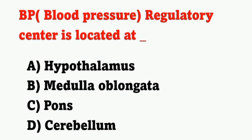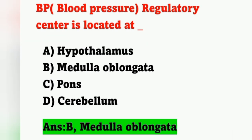Next question: the blood pressure regulating center is located at — options: A) hypothalamus, B) medulla oblongata, C) pons, D) cerebellum. The BP regulating center is located at the medulla oblongata, also known as the cardiovascular center. Option B is the correct answer.